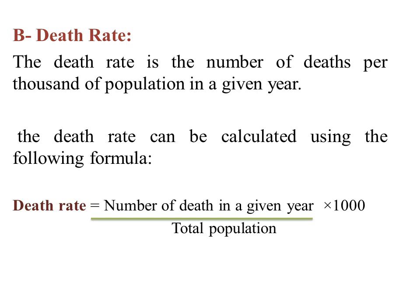Death rate is the number of deaths per thousand of population in a given year. Death rate can be calculated using the following equation: death rate equals number of deaths in a given year divided by total population, times 1,000.